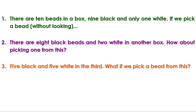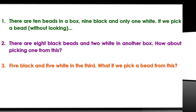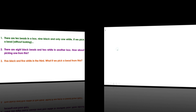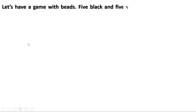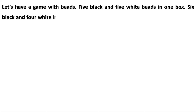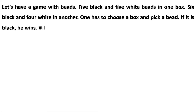We can say all these in a different way. From the first and second boxes, the probability of getting a black bead is more. From the third box, the probabilities are the same. Let us have a game with beads: 5 black and 5 white beads in one box, 6 black and 4 white in another.